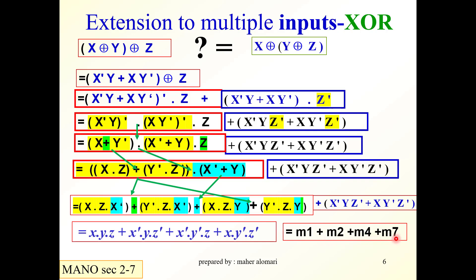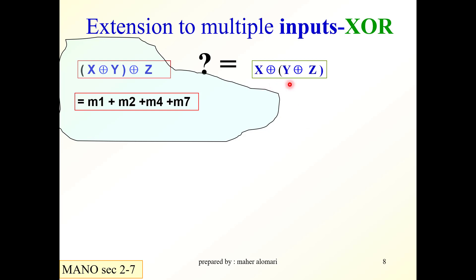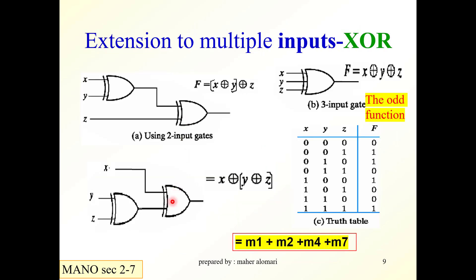Looking at the right-hand side, X XOR Y XOR Z: following the same procedure, this expression also simplifies to minterms M1, M2, M4, and M7. You can verify this yourself. So the two expressions are identical.